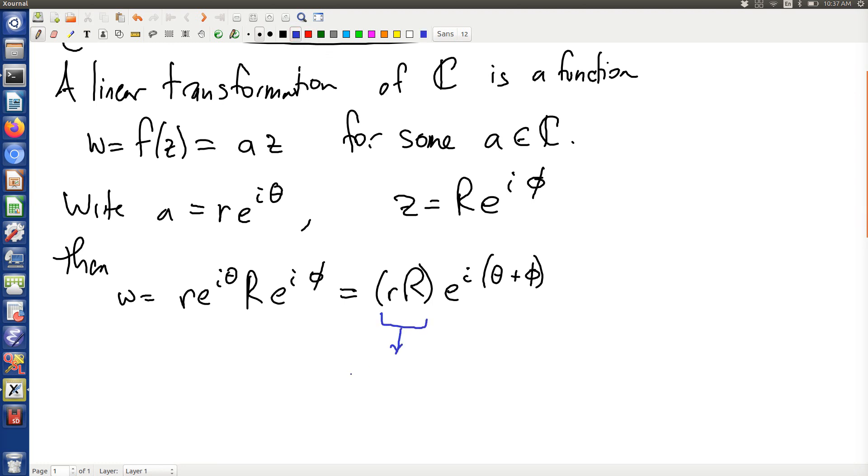Effect 1 is a scaling or a dilation by little r and also a rotation by theta. Little r is the magnitude of A, and little theta is the argument of A.